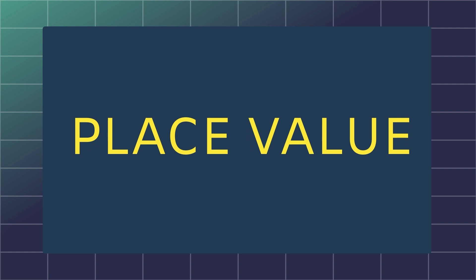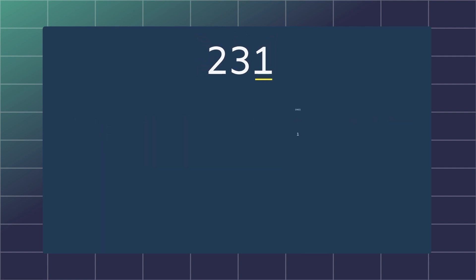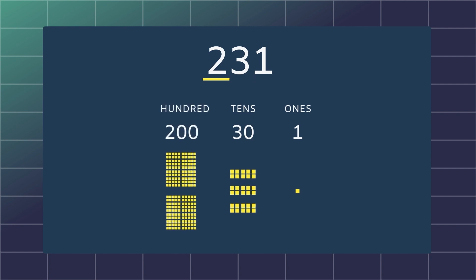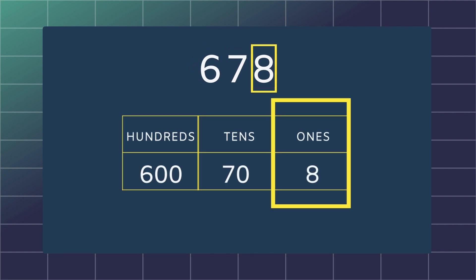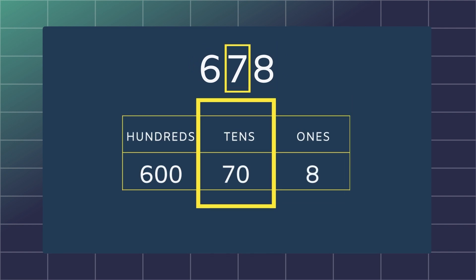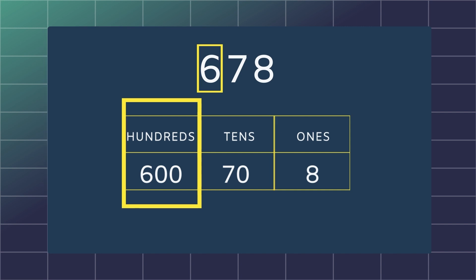To do this easily, jump back a step and think about place value. We learn that place value shows the value of a digit depending on its position in a number. If you take the number 678, starting from the right to the left, the 8 is in the ones place, the 7 is in the tens place, and the 6 is in the hundreds place.